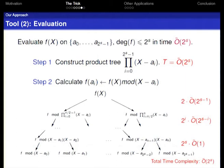This is a time-space, or time-memory exchange: storing the product tree costs 2^s in memory.